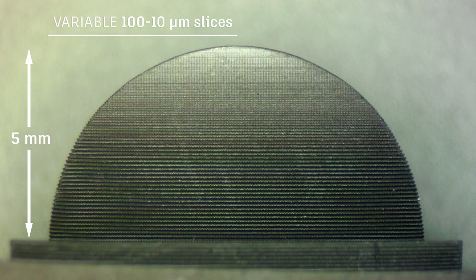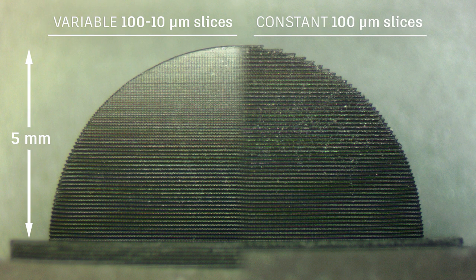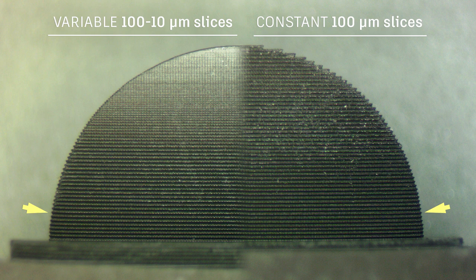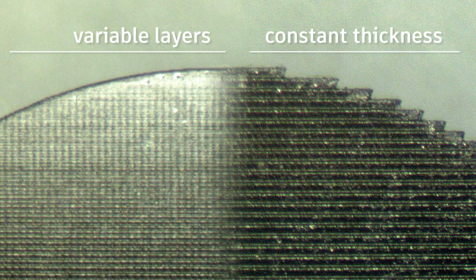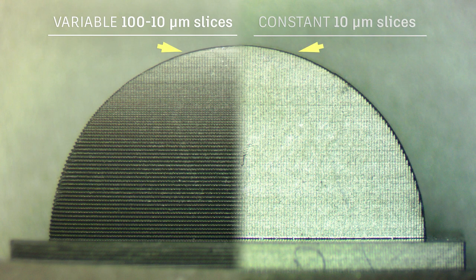Here's a disk printed with variable layers. Here it is compared to a disk printed at constant 100 micron slices. At the base, both prints are the same, but at the top, the variable slicing looks much better. Now let's compare it to constant 10 micron slices. At the top, they both look the same. At the base, the 10 micron slices are definitely smoother, but that section also takes 10 times as long.